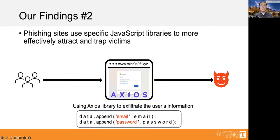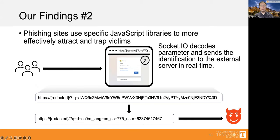We also found that phishing websites use certain JavaScript libraries in phishing attacks. For example, phishing websites were leveraging libraries such as Axios, which was used to exfiltrate sensitive user information. In another finding, attackers employed the socket.io library to decode URL parameters and transmit them to external servers in real-time.